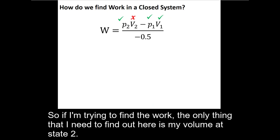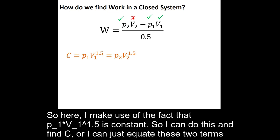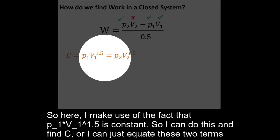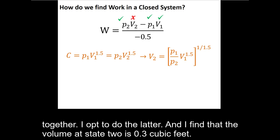So if I'm trying to find the work, the only thing I need to find out here is my volume at state two. So here I make use of the fact that P₁V₁^1.5 is constant. I can do this and find C, or I can just equate these two terms together. I opt to do the latter and I find that the volume at state two is 0.3 cubic feet.